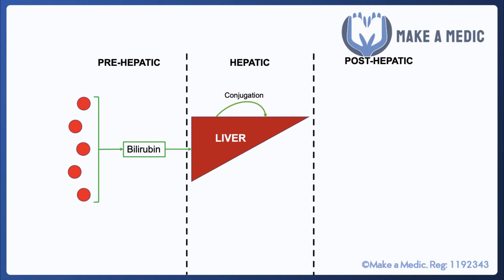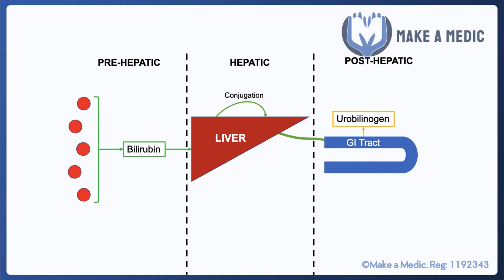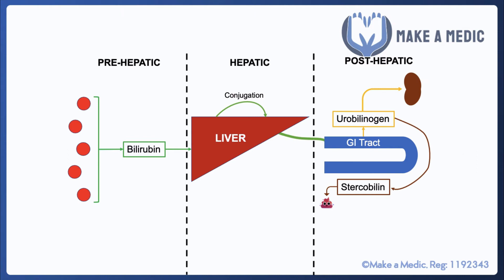The conjugated bilirubin then passes into the GI tract. Once there, some of it is converted by colonic bacteria into urobilinogen. Two things can happen to urobilinogen: some is converted within the GI tract into stercobilin, a brown substance that makes feces brown, while some is reabsorbed via the GI tract and excreted through the kidneys, as it is water soluble.